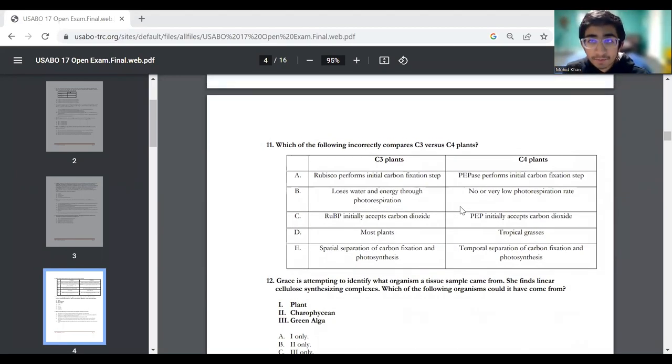Question 11. We have to compare C3 and C4 plants. This is mentioned quite a lot in the chapter, I think 9 or 11, or in the plant chapter, depends what version you have. So as I read through the answers, PEPcase, Rubisco, yes, so Rubisco is correct. Rubisco does perform the initial carbon fixation step in C3 plants. Yes, they lose a lot of water and energy through photorespiration. Okay, so this one, the answer seems to be E.